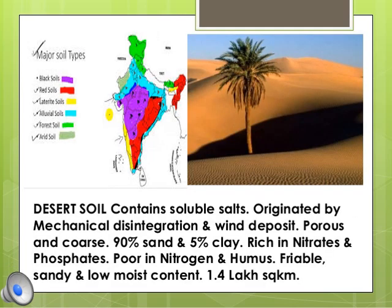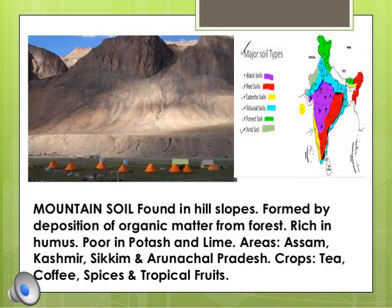Desert soil, also called arid soil: see the light green part on the map near the Rajasthan area — there you find the arid soil. Desert soil is found in hot and semi-arid regions and has a thick layer of sand. This soil lacks humus content but contains a high proportion of soluble salts. With the help of irrigation, a variety of crops can be grown in desert soil.